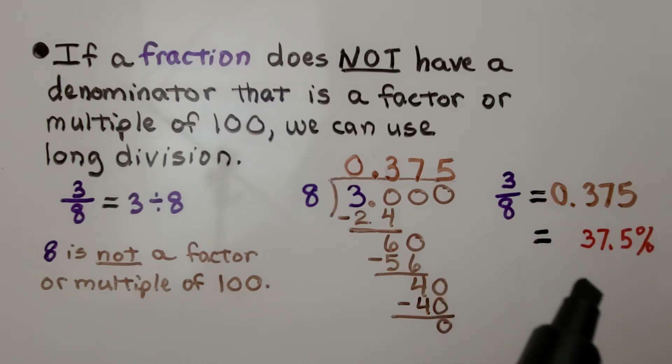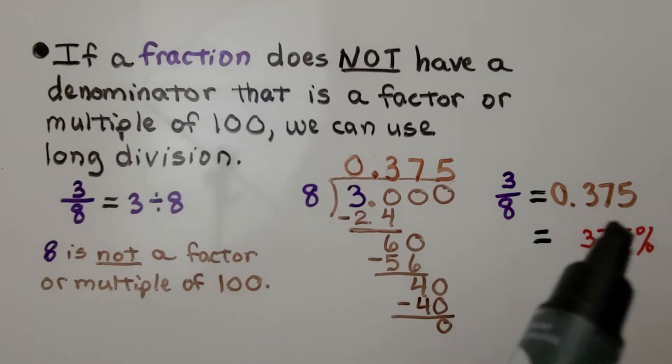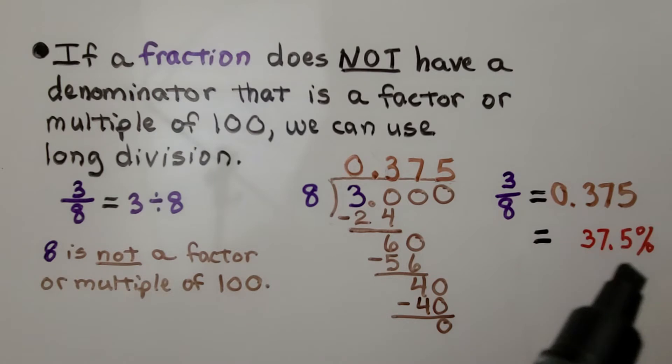We can say that 3 eighths as a decimal is 0.375, or 375 thousandths. And we can also say it's 37.5 percent. We're going to move that decimal two places to the right and add a percentage sign. We'll talk about that more in a minute.